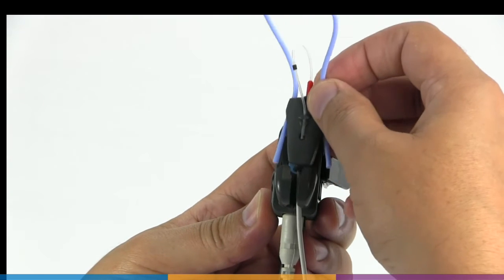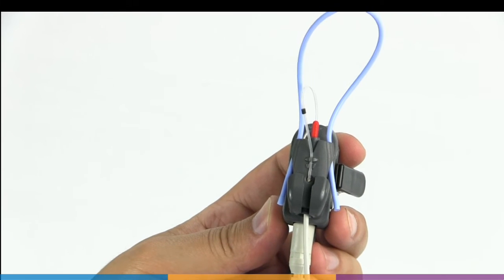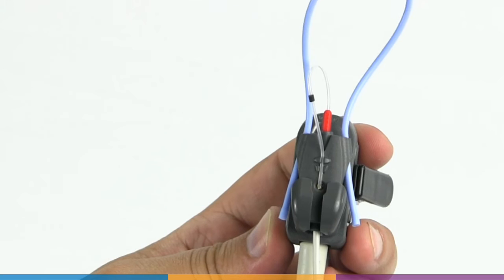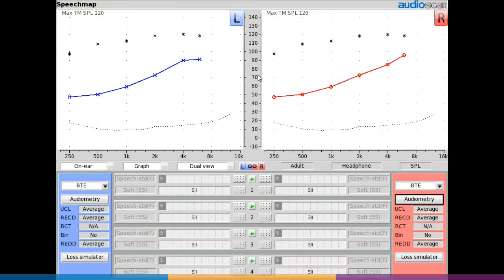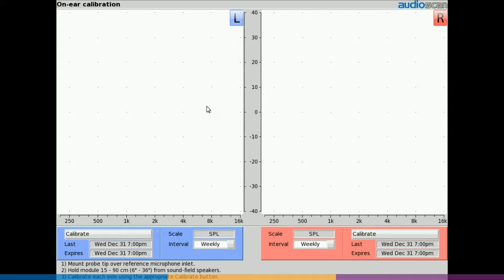Ensure that the probe tubes are correctly positioned over the reference microphones and the reference microphones are facing outward. Right-click and choose on-ear calibration. Hold the probe dock 15 to 30 centimeters or 6 to 12 inches from the speaker with the microphone to be calibrated facing directly towards it.